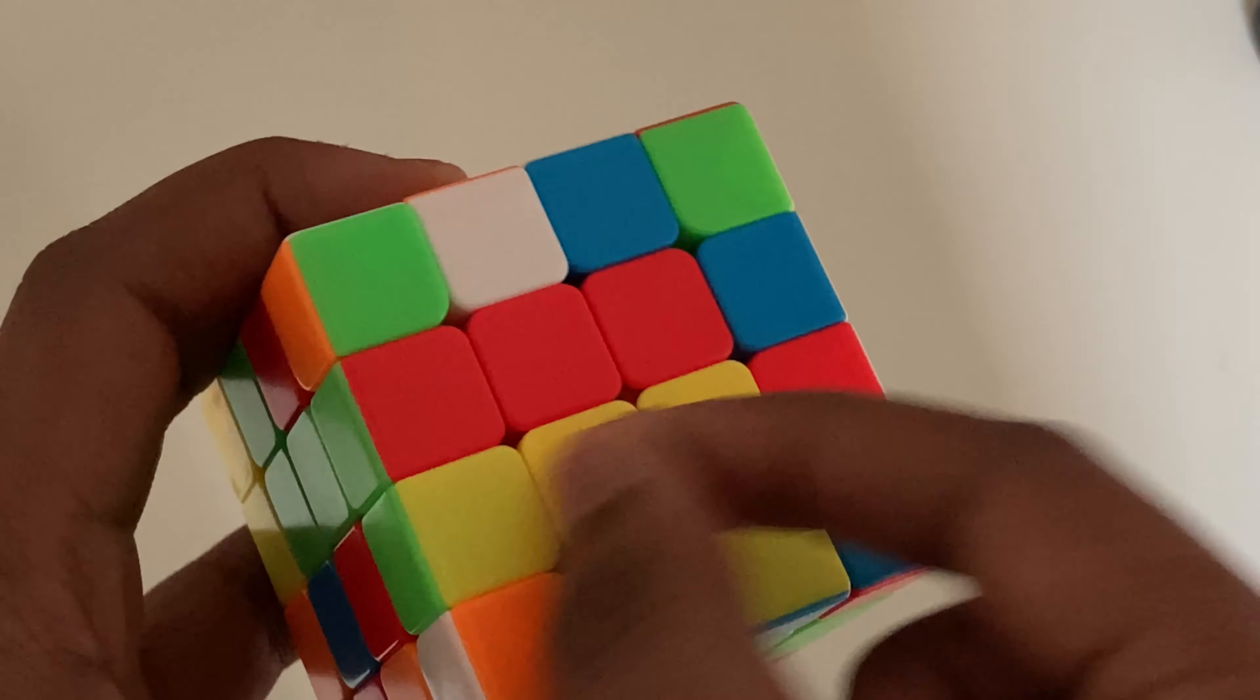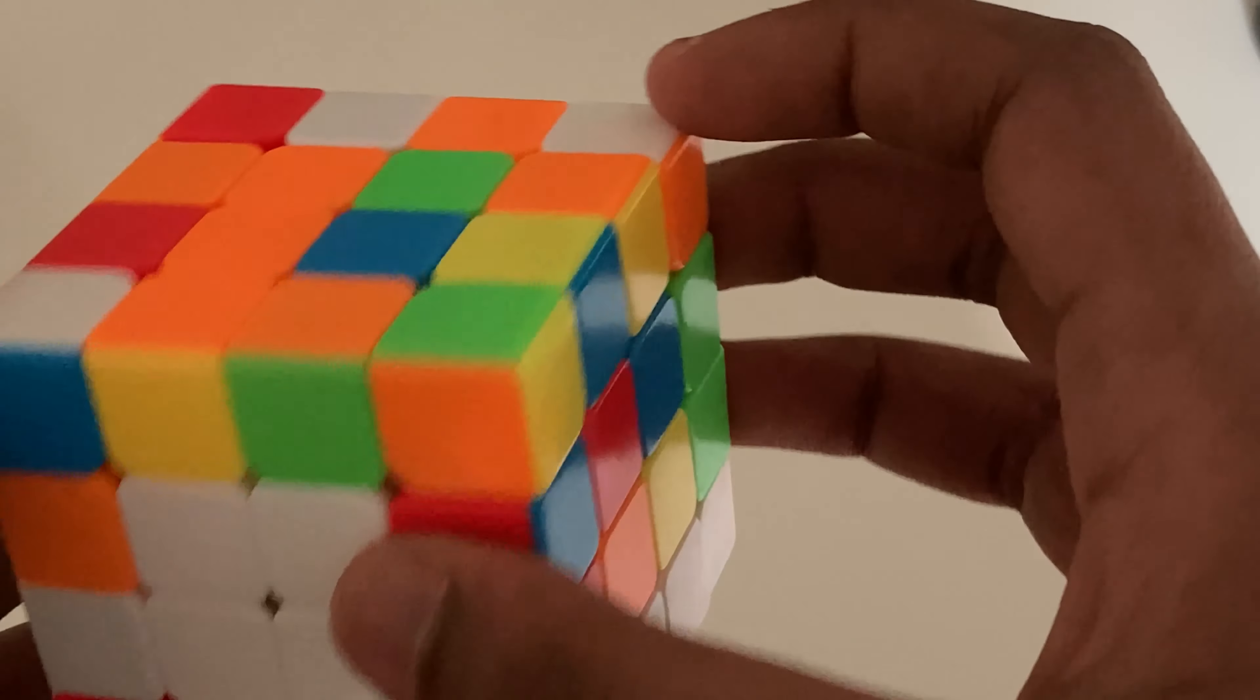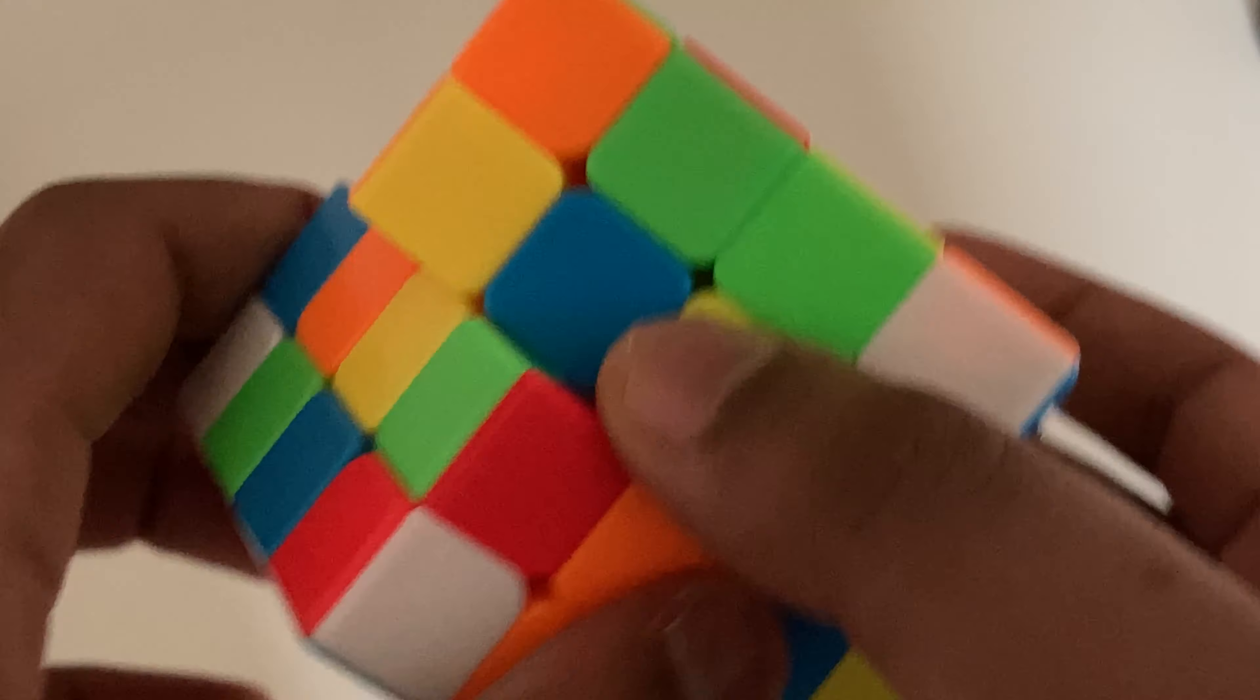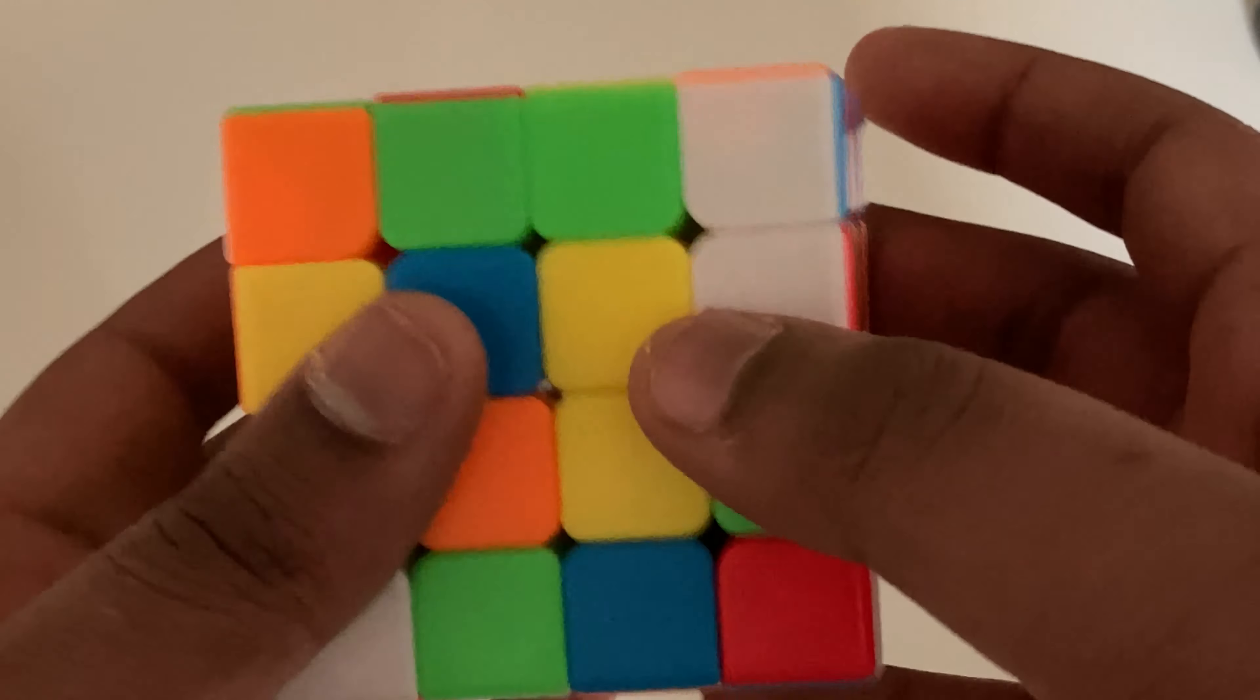So here we already have a pair, so that's fine. And here we have a yellow and a yellow, and it looks like these are already in the same spot, so we can just do it.